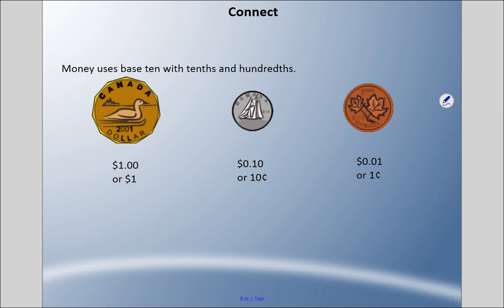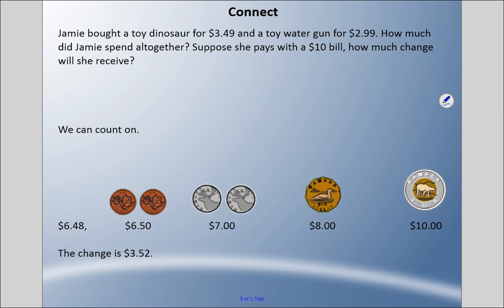Now let's deal with those pesky hundredths. We're going to revisit questions from the last video. Money uses base ten with tenths and hundredths. Dollar is our whole, dimes are a tenth of a dollar, and pennies are a hundredth of a dollar. Back when I was a kid, cashiers would count back the money to ensure they did it properly.